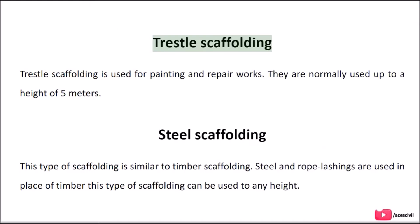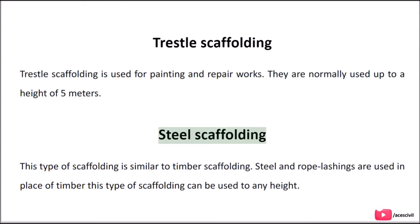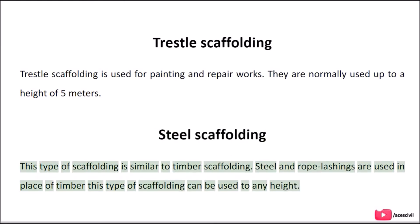Trestle Scaffolding is used for painting and repair works. They are normally used up to a height of 5 meters. Steel Scaffolding is similar to timber scaffolding, but steel and rope lashings are used in place of timber. This type of scaffolding can be used to any height.